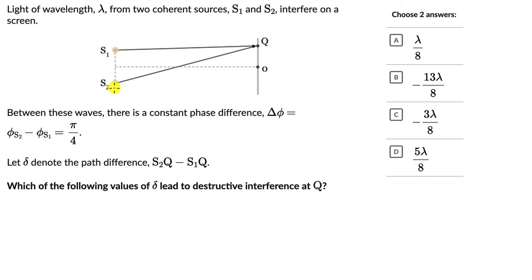We can see these two sources, S1 and S2, they are interfering on different points of the screen. Delta is the path difference, S2Q minus S1Q. We need to figure out what values of δ lead to destructive interference.